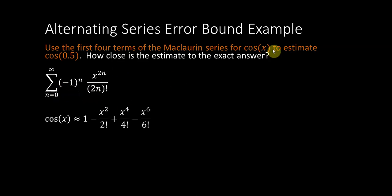Okay, so we're using the first four terms here. So this is going to be 1 minus x squared over 2 factorial plus x to the fourth over 4 factorial minus x to the sixth over 6 factorial.